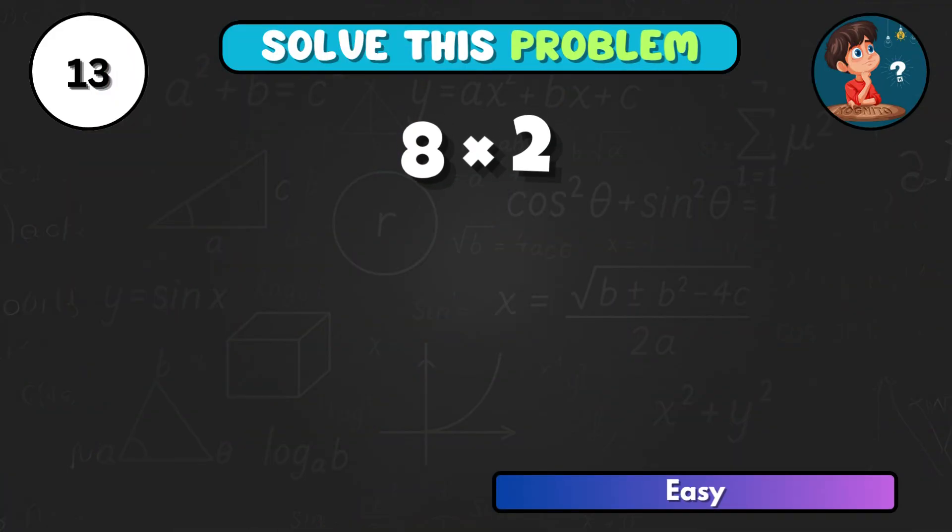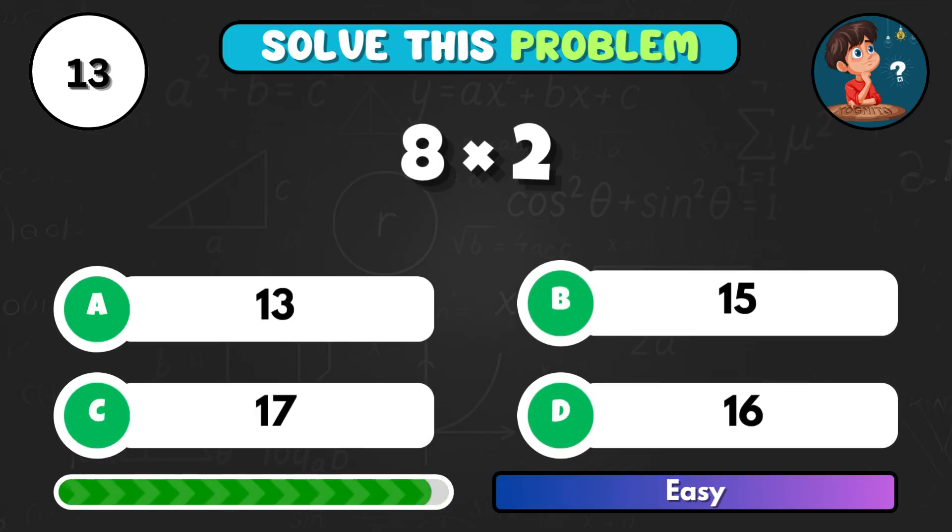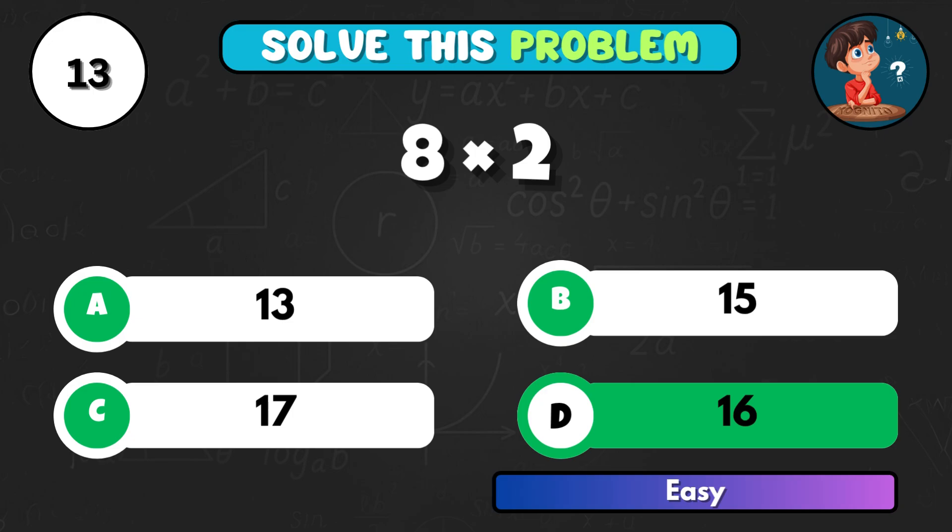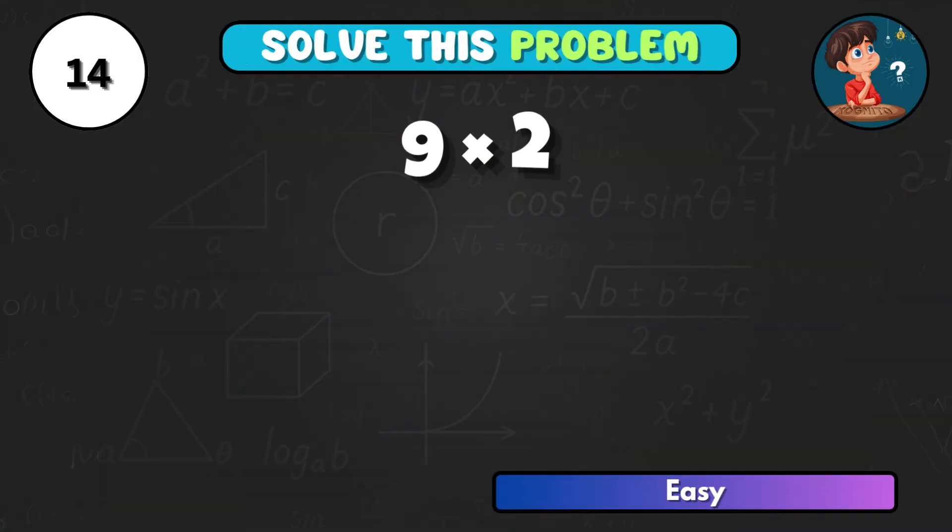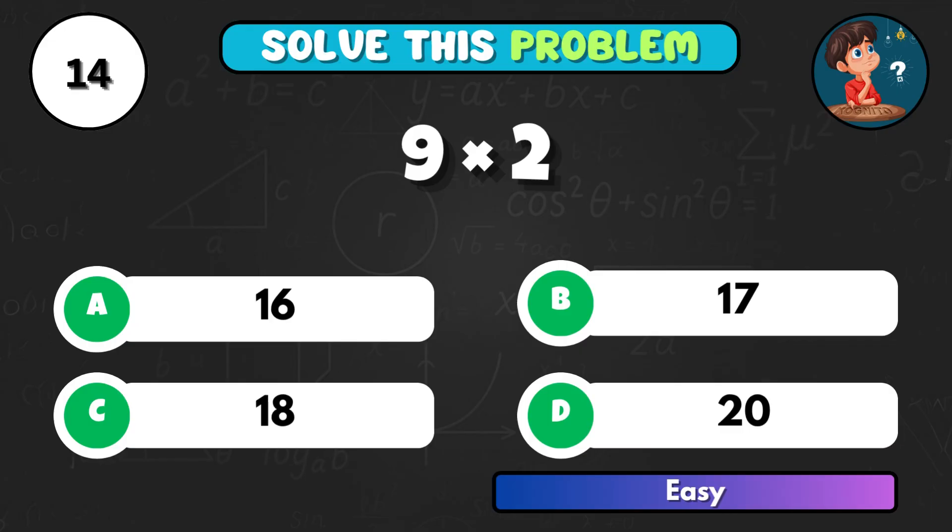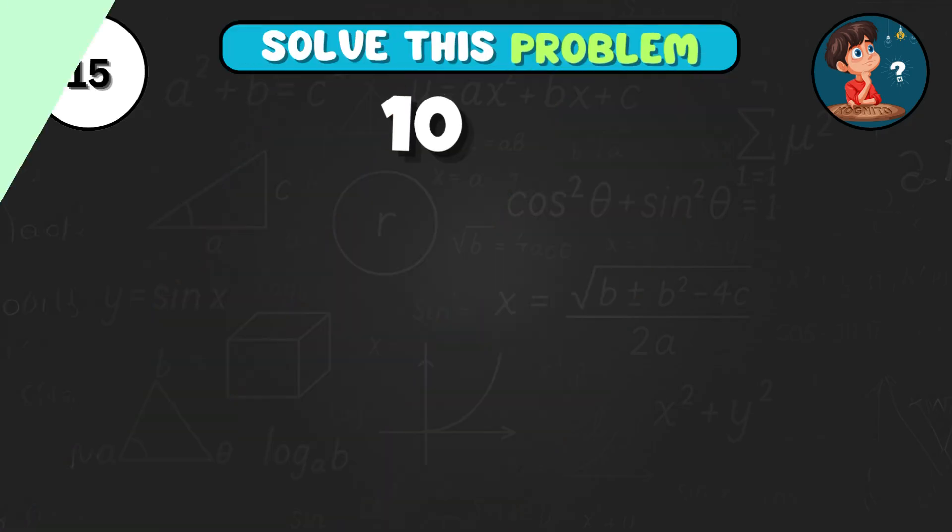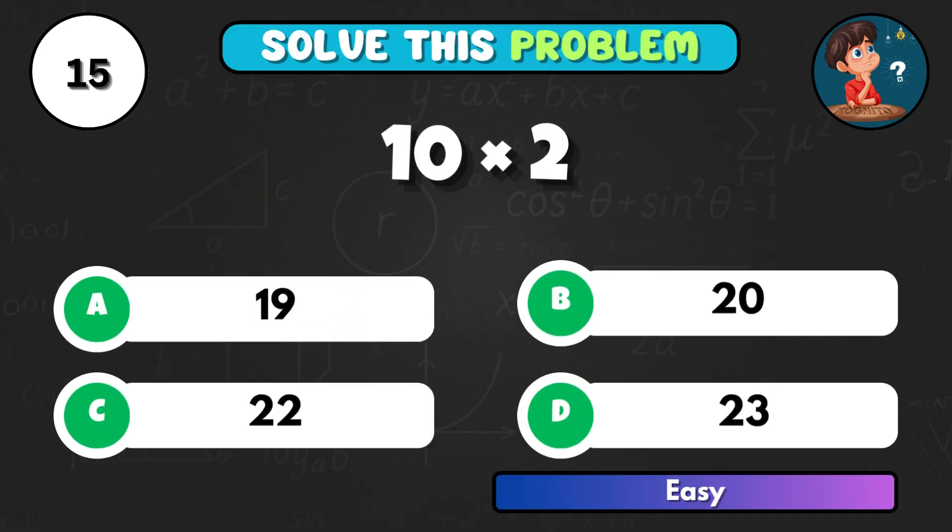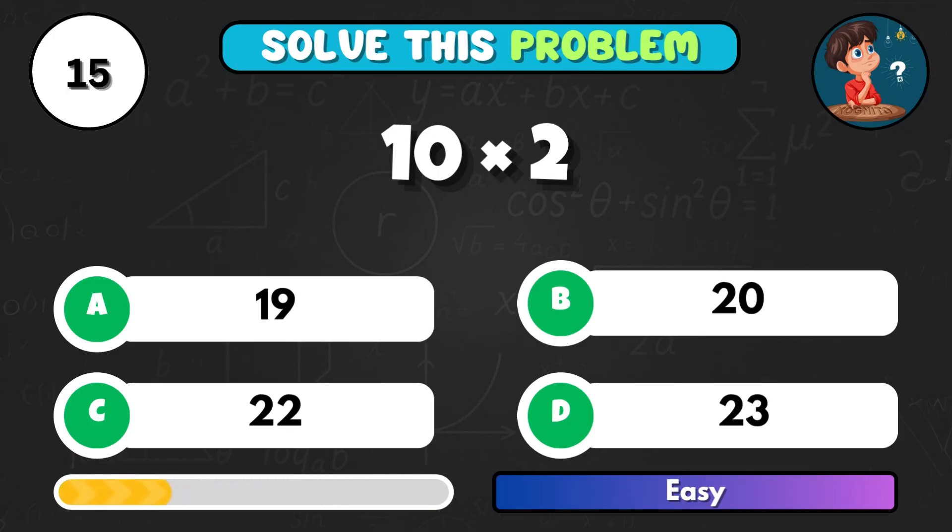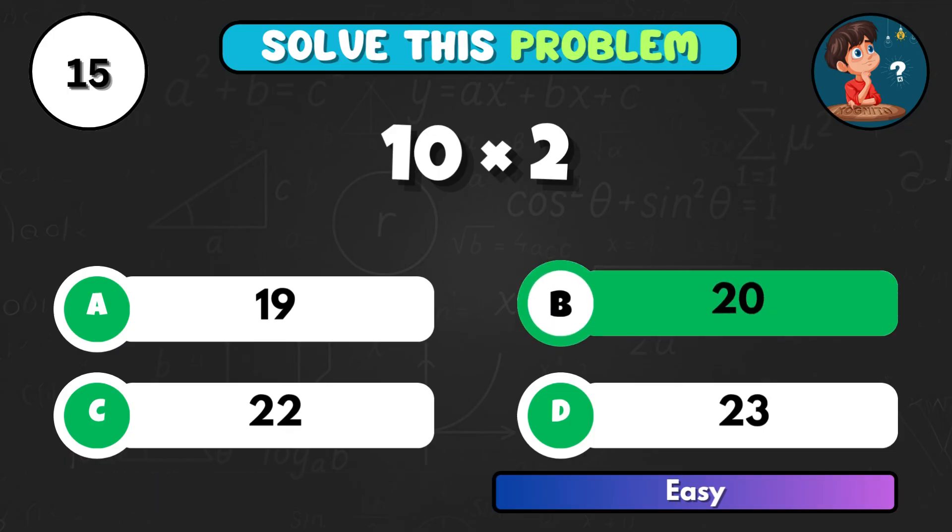8 times 2, what number do you get? Option D and the answer is 16. 9 times 2, quick one. That's C, which equals 18. 10 times 2, what's your result? Correct choice B, giving 20.